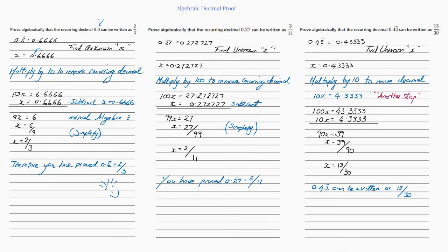It's 10x because we times it by 10. Now we've got to subtract — we're going to subtract our original x from 10x. If you do that, 6 minus 6 is 0, cancel out, cancel out, cancel out. And 6 minus 0 is 6. 10x minus x is 9x. So now we need to divide by 9 and simplify. We simplify 6 over 9 by dividing by 3, which gives us 2 over 3. Therefore you have proved that 0.6 reoccurring equals 2 over 3 as a fraction.